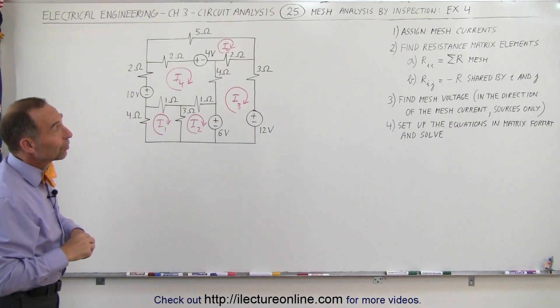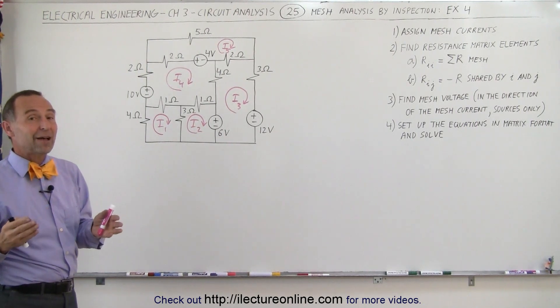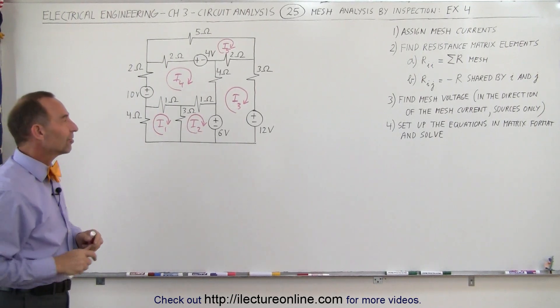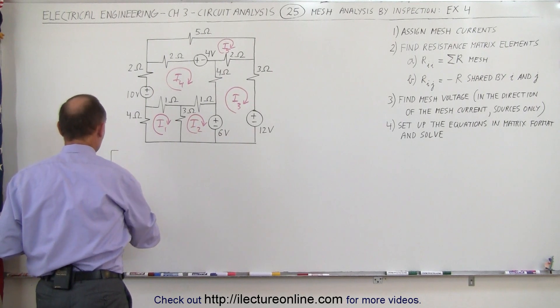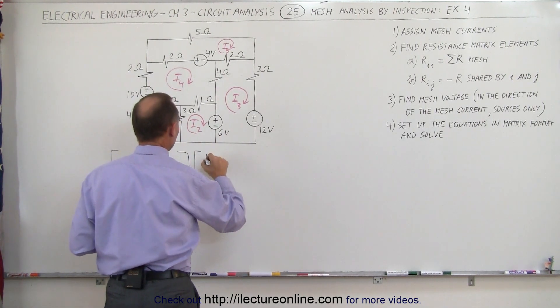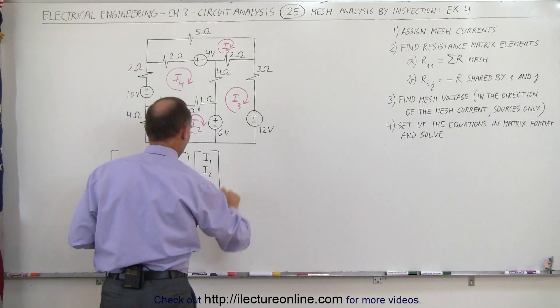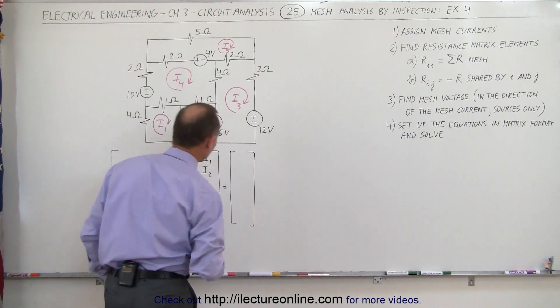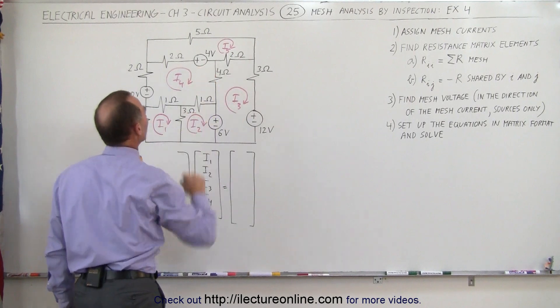Now the next thing we want to do is find the resistance matrix. For a five by five matrix, that means we need to find 25 elements. It's not as bad as it sounds but it is a little bit of work. We multiply that times the current matrix, which is the five unknown currents I1 through I5, and that equals the voltage matrix. Notice that there are four voltage sources here.